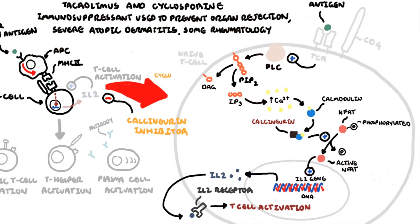Cyclosporin is a calcineurin inhibitor which works by binding to the intracellular receptor cyclophilin-1, producing a complex known as cyclosporin-cyclophilin. This complex subsequently inhibits calcineurin, which in turn stops the dephosphorylation as well as the activation of the nuclear factor of activated T cells.